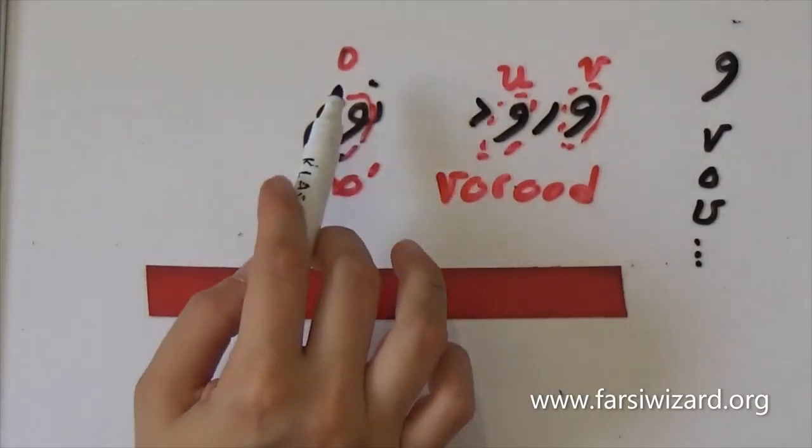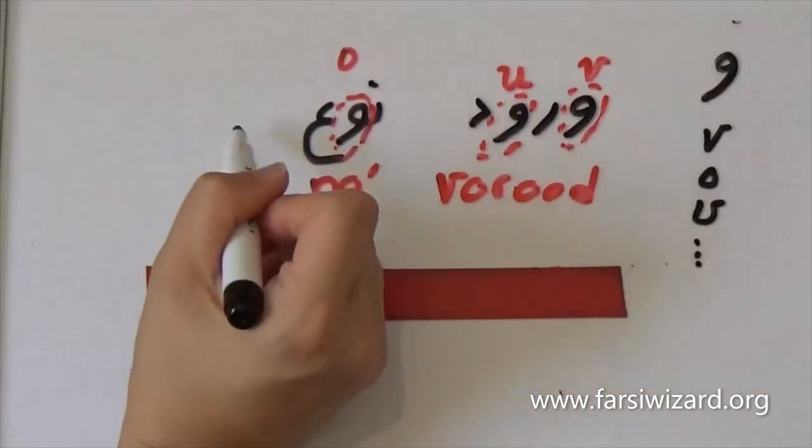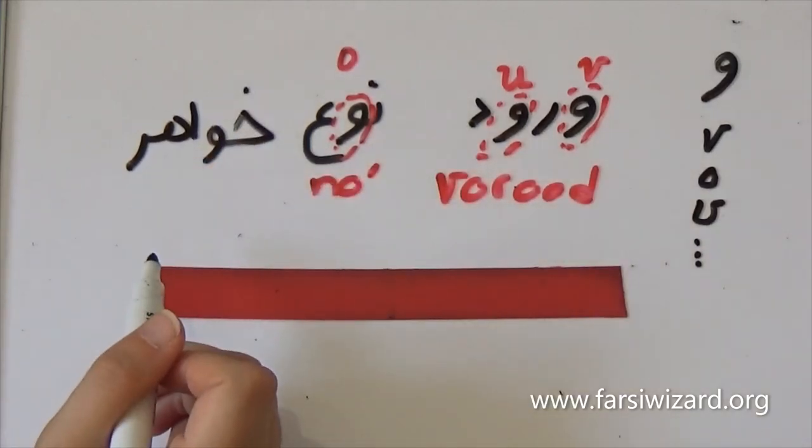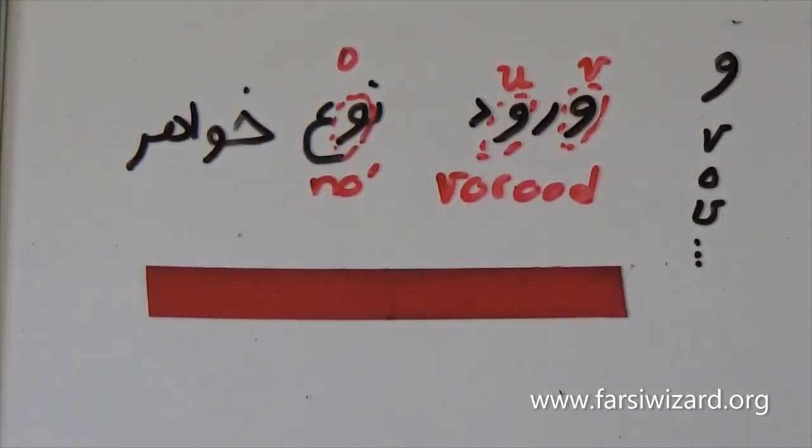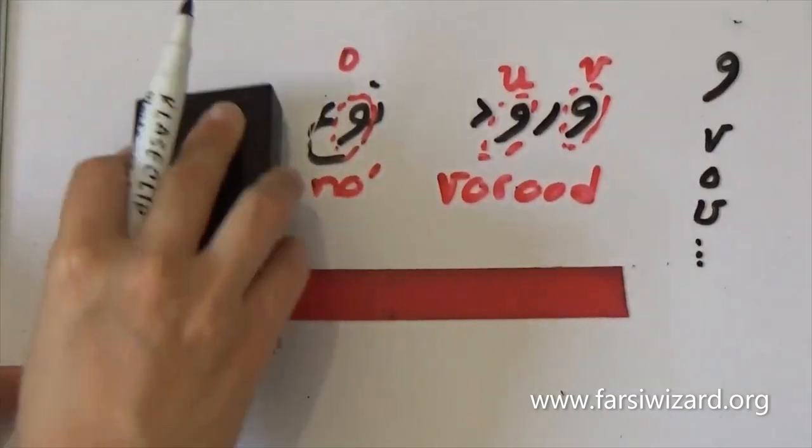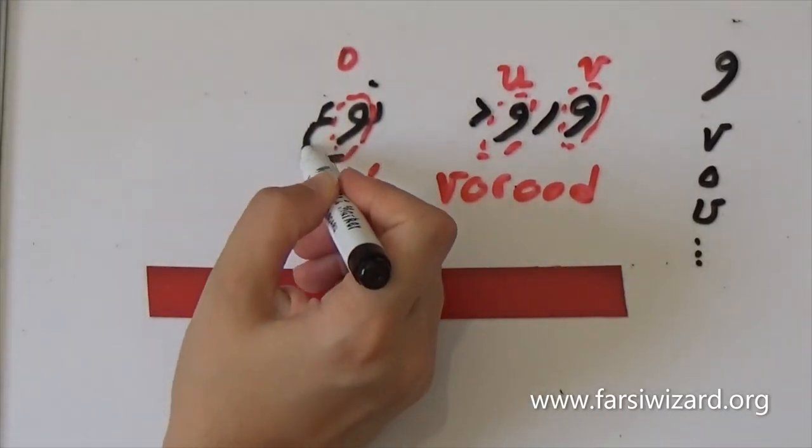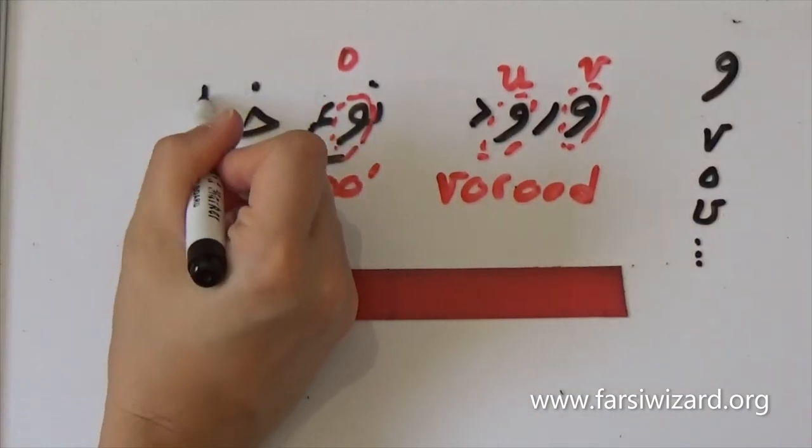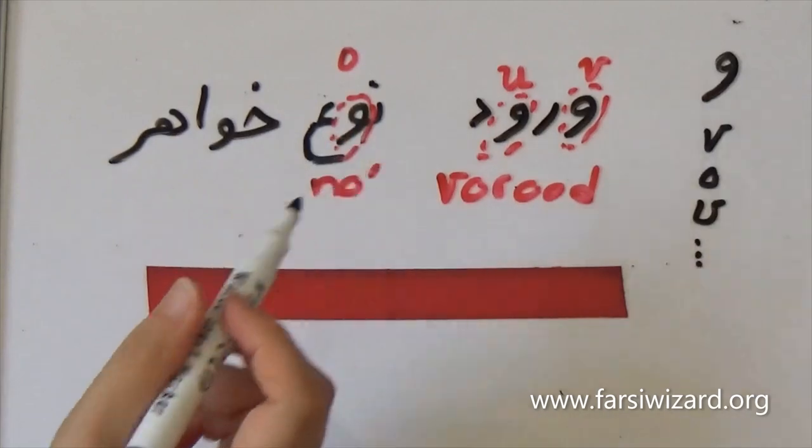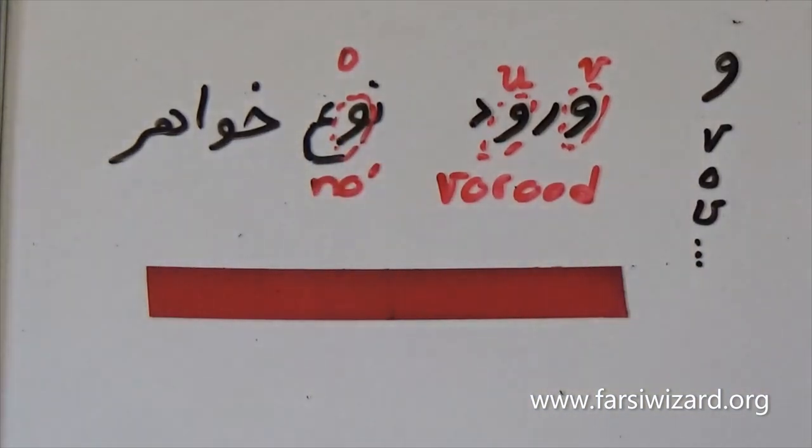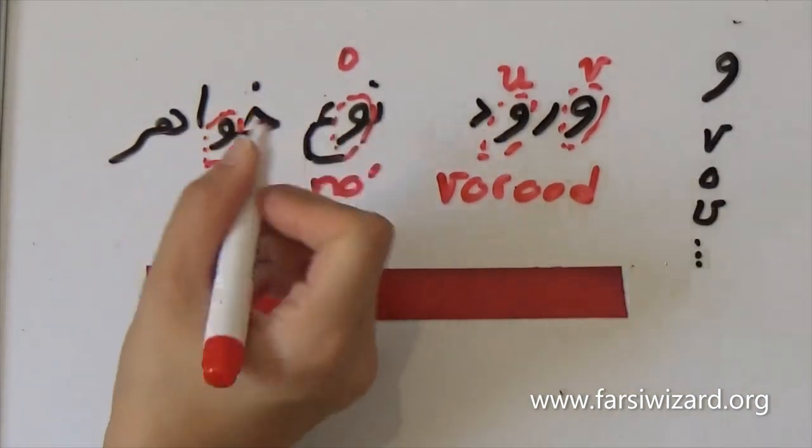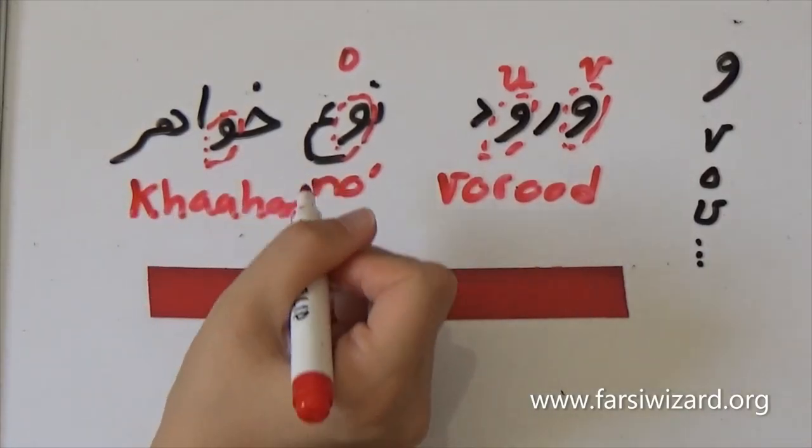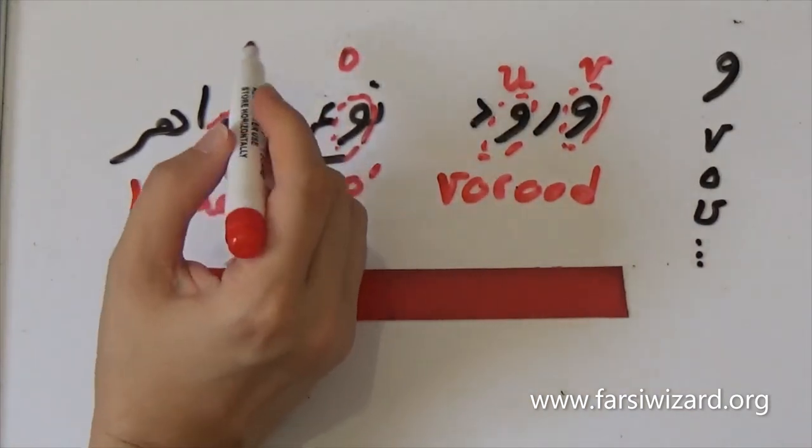So please be careful. As you can see this letter is tricky. Now you're going to be even more surprised to see this example. This word technically is written with a vav but in fact what happens is I'm going to write it one more time so you can see it more carefully. It is khahar. In fact this vav is not even pronounced here. So we write it but we do not read it. Very rare thing in Farsi.